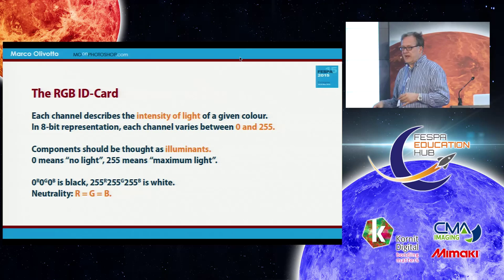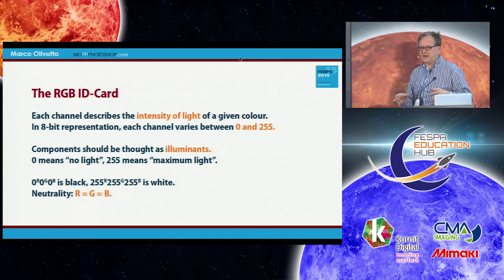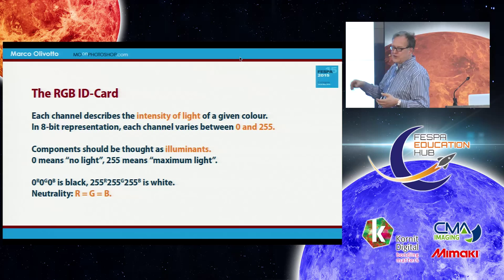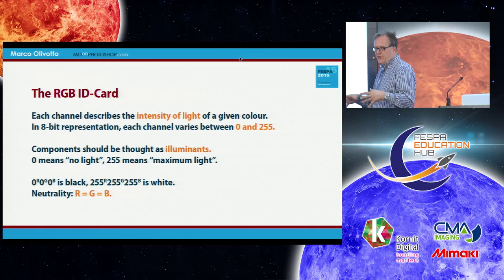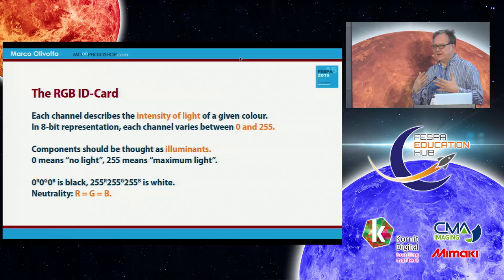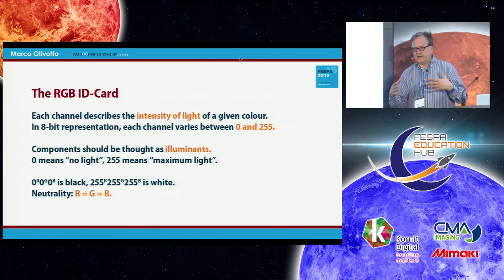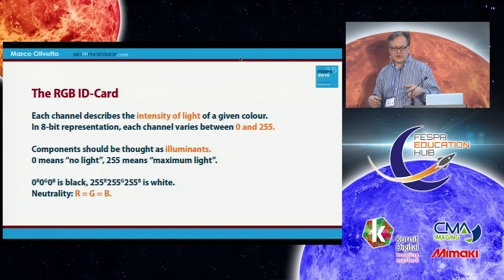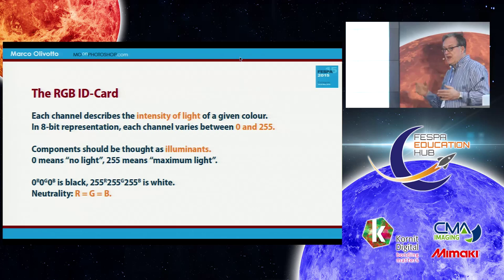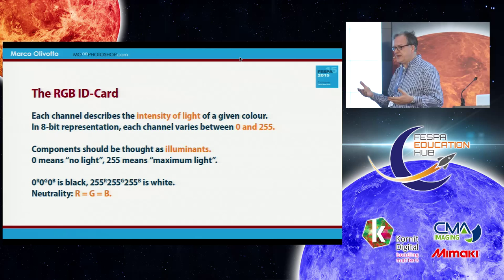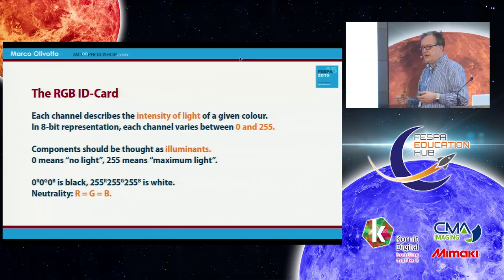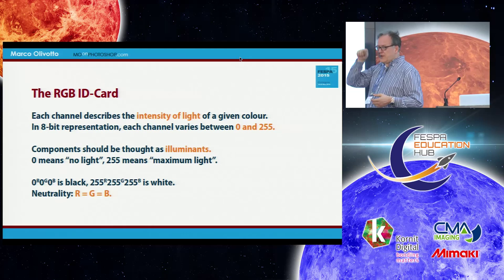Back to RGB in more depth: each channel — red, green, and blue — describes the intensity of light of its own component for a given color. You build colors by adding different sources of red, green, and blue light in different percentages. In 8-bit representation, each channel has a variation range between 0 and 255. This is because we are working with an 8-bit number, which has 256 possible values — that's 2 to the power of 8.